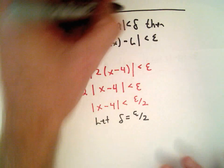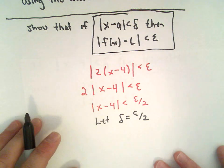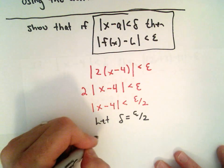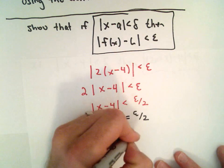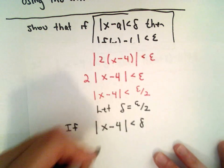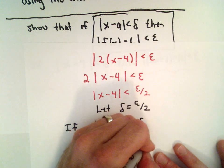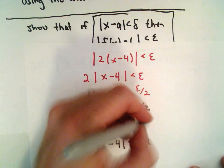So okay, so now I'm going to justify this stuff, and again I'm just going to reverse the steps, but that's all we have to do. So notice if the absolute value of x minus a, which is 4, if that's less than delta, well in this case we would have the absolute value of x minus 4, that would be less than epsilon over 2, because well delta equals epsilon over 2.